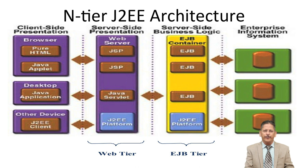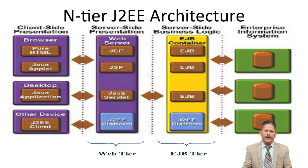For server-side presentation, JSP is a very important tool. We require JSP — Java Server Pages — and Java Servlets. If working on Microsoft platforms, we may need Active Server Pages (ASP) or PHP. This second tier is the web tier, the third is the EJB tier, and the fourth is the enterprise information system. Many additional hidden layers can be included between these tiers.